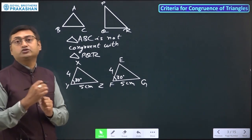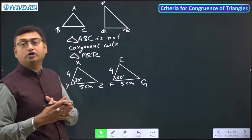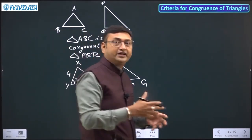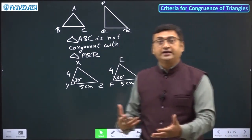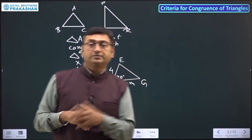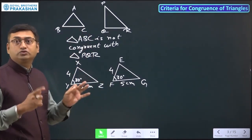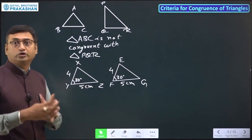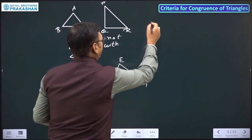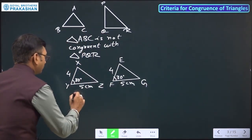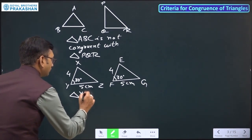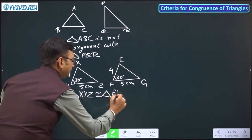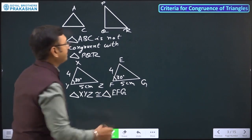Why do we have different criteria to check whether triangles are congruent? Because every time we cannot check all the sides and all the angles. So we should have some rules, known as criteria, that we can use to determine whether both triangles are congruent or not. So before that, let me write down: triangle XYZ is congruent to triangle EFG.